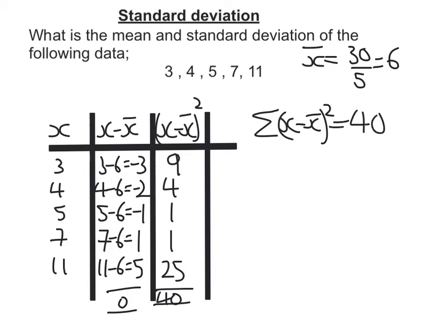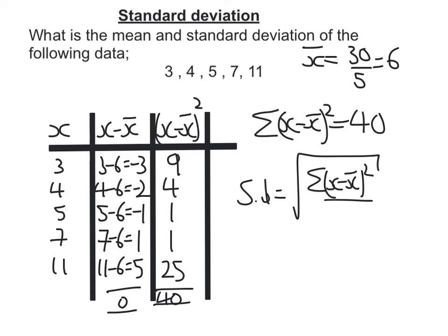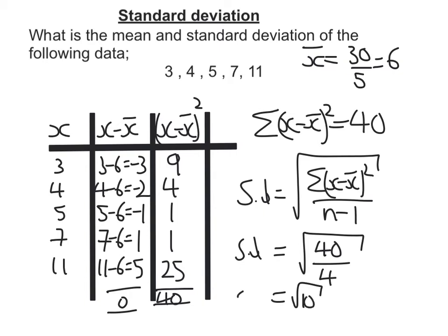For the standard deviation formula — which you are given in your formula sheet — standard deviation is the square root of the sum of (x minus x̄) squared, over n minus 1, where n is the number of data points. Here, the numerator is 40, and n minus 1 is 5 minus 1, which is 4. So the standard deviation is the square root of 10, which gives 3.16.